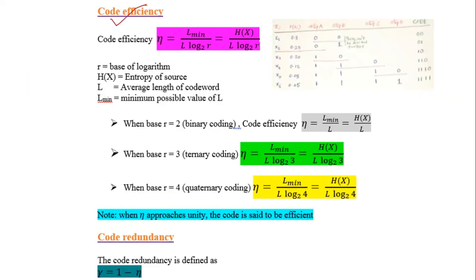Code efficiency in source coding is defined as η = Lmin / L. R is the base of the logarithm - base 2 for binary coding, base 3 for ternary coding, and base 4 for quaternary coding. It is the ratio of Lmin to L, where L is the average length of the codeword.